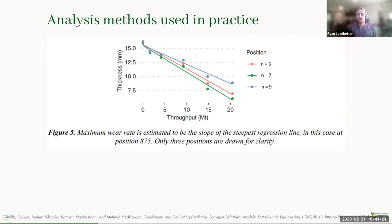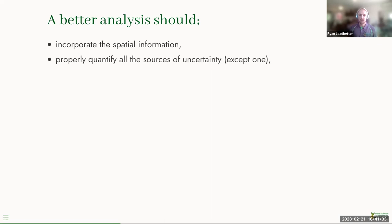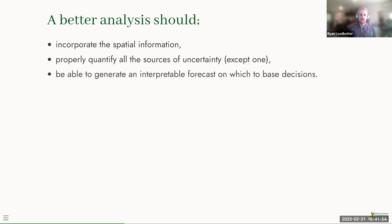Another problem that arises is that engineers or technicians often change the inspection routine halfway through a belt's life, so the measurement locations change, and it's hard to incorporate that. A better analysis should incorporate spatial information about the wear behavior of the belt, properly account for all sources of uncertainty — measurement uncertainty, uncertainty in the degradation process, and in the parameters — and produce an interpretable forecast that the engineer can use to make and defend decisions.